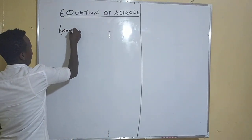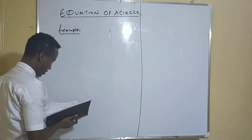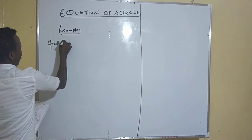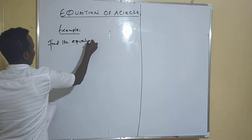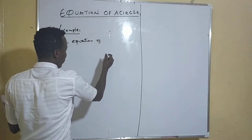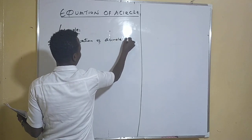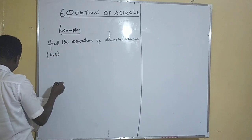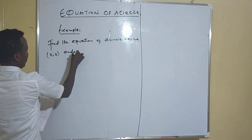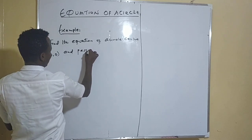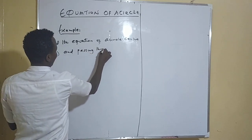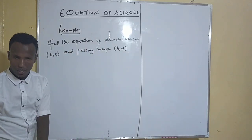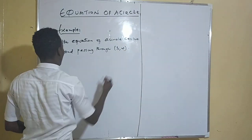This is Example One. Find the equation of a circle with center at zero, zero and passing through the point three, four.